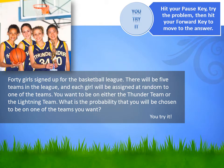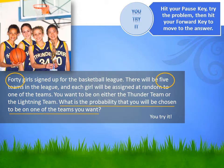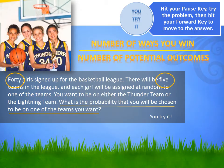This is a word problem, so I'm going to circle the numbers and underline the question. I circled forty girls and five teams, and I underlined the question: what is the probability that you will be chosen to be on one of the teams you want? To calculate that probability, I need to remember the probability formula. That's right — it's the number of ways you can win divided by the number of potential outcomes.